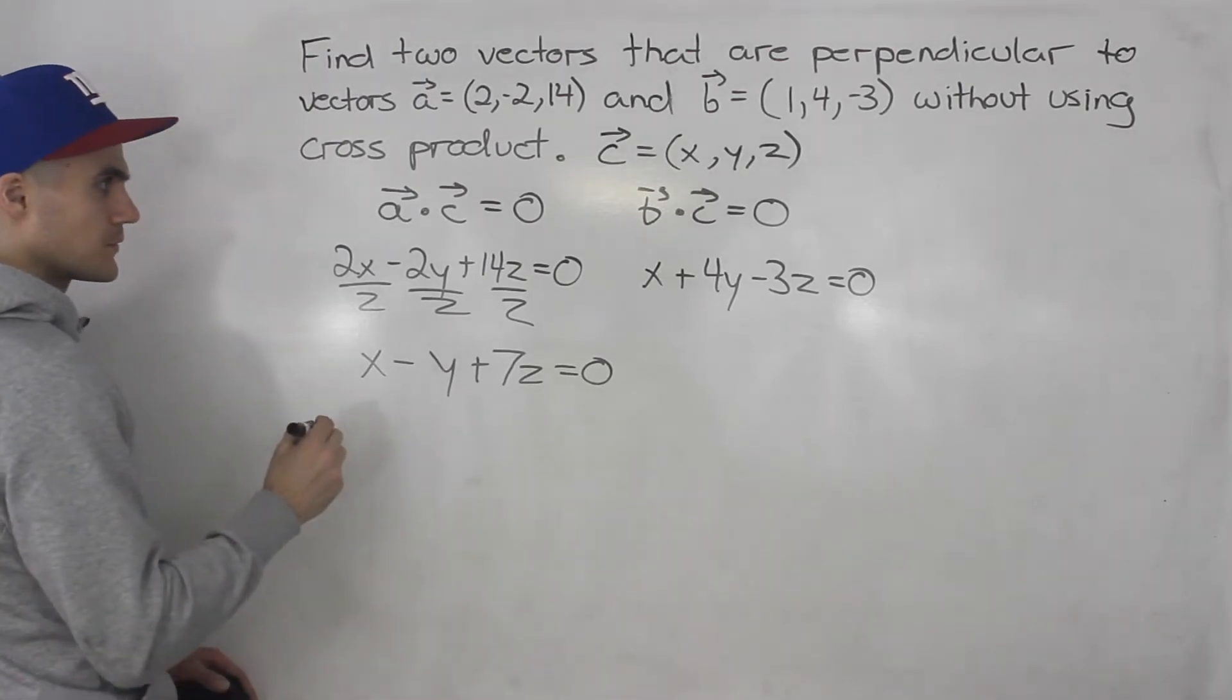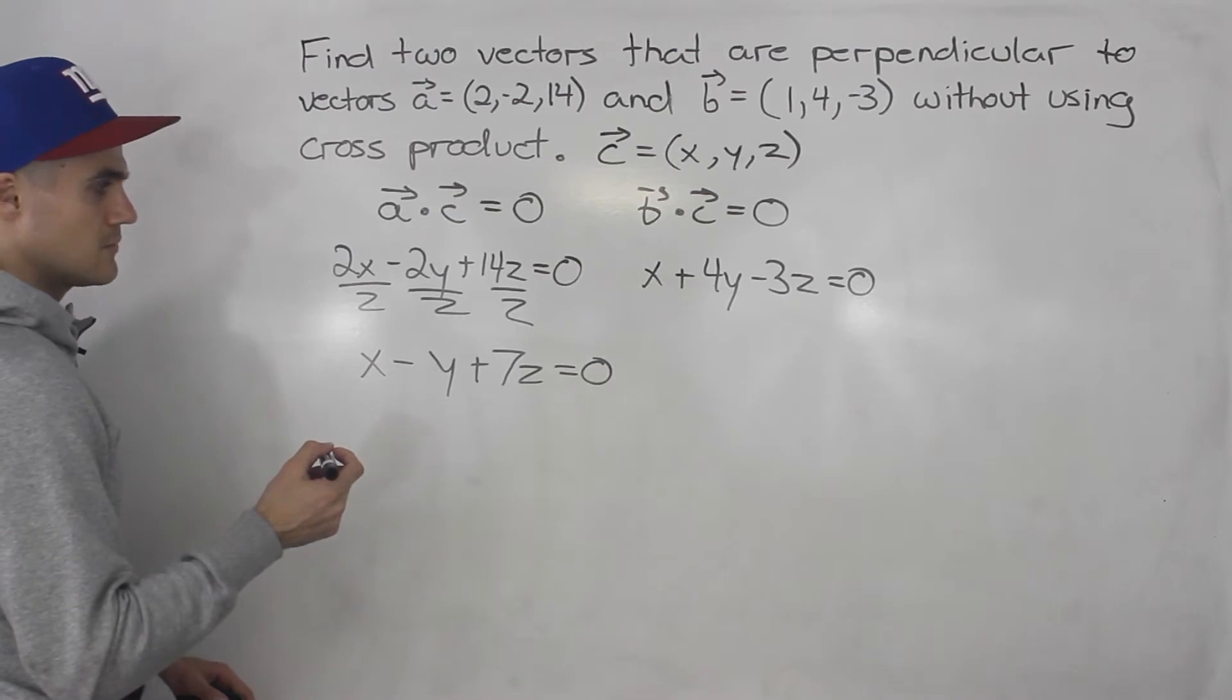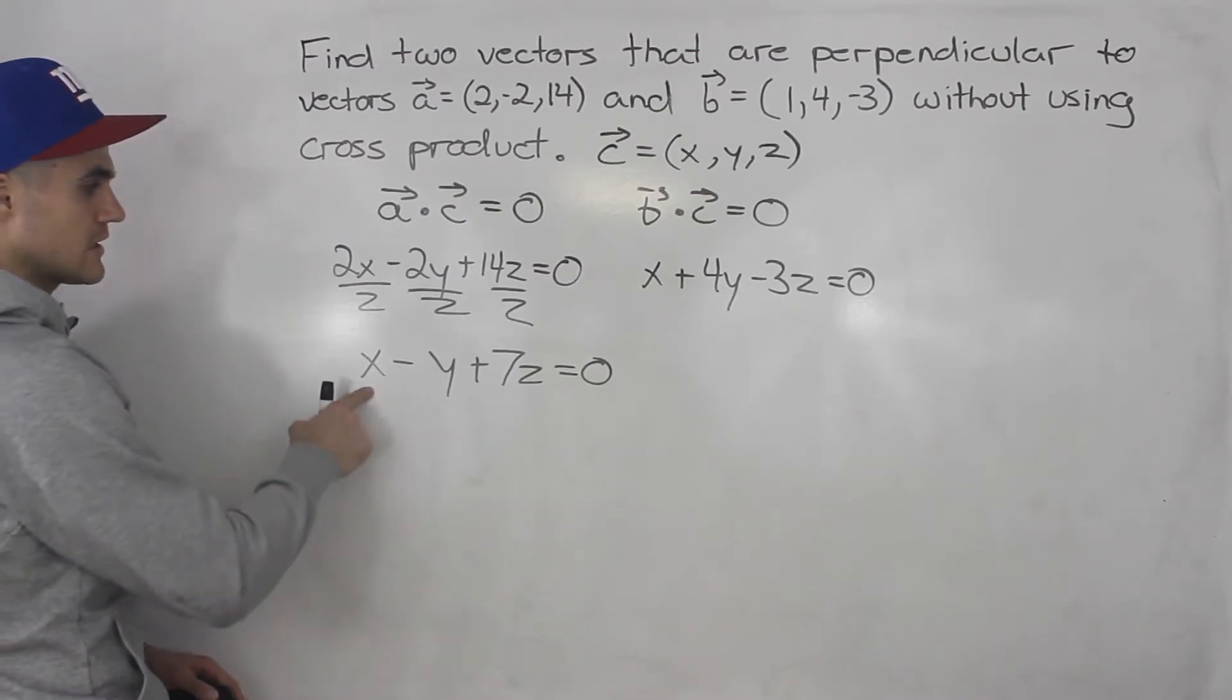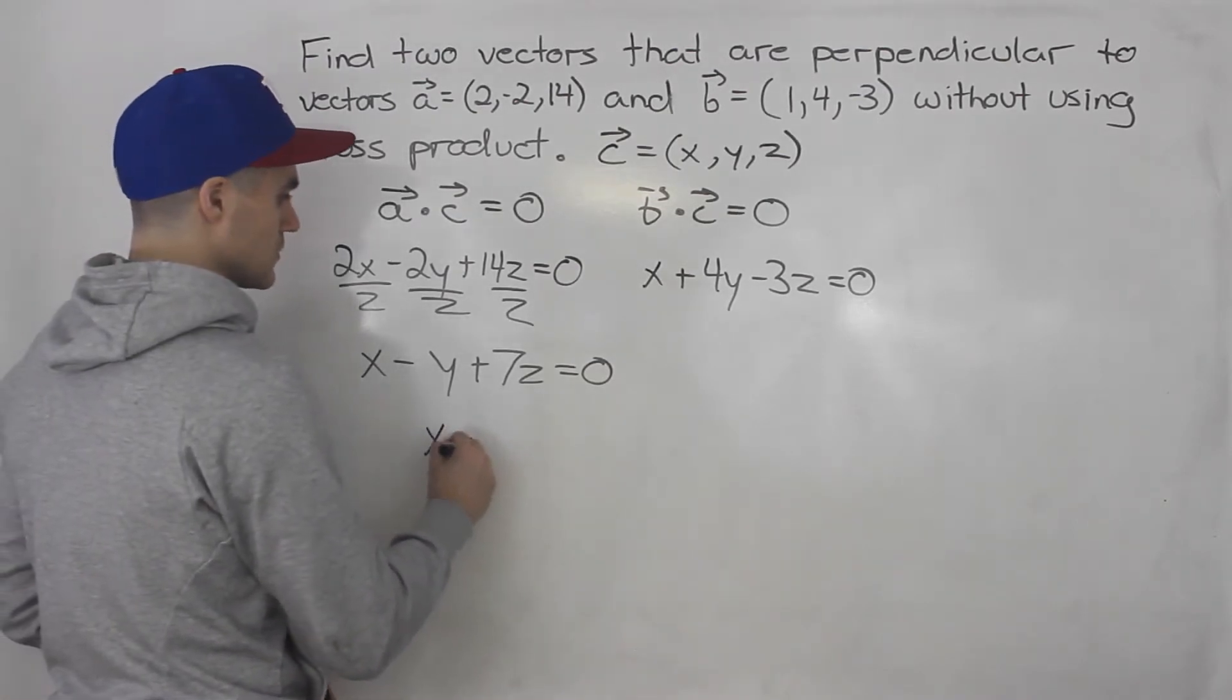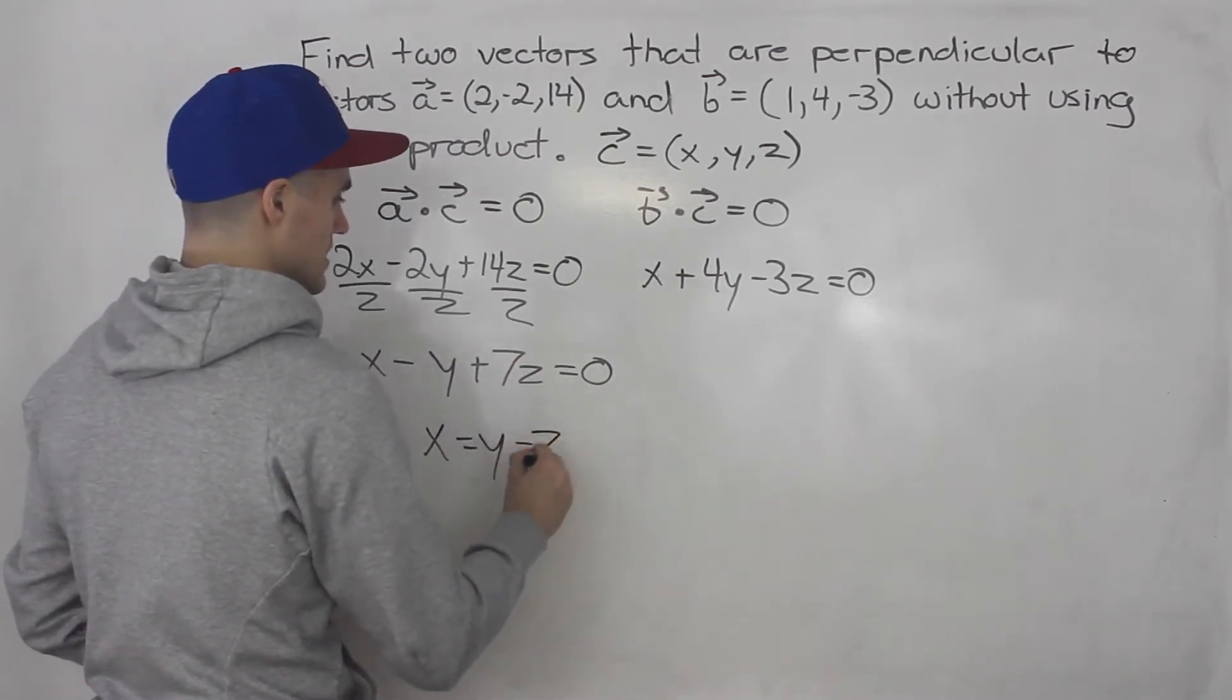So to solve this, what I'm going to do is I'm going to isolate for this X here. So X equals, bring this over. So negative Y turns into positive Y minus 7Z.